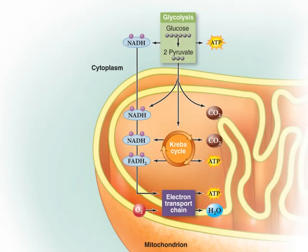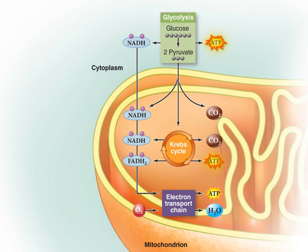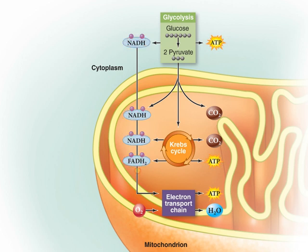Cellular respiration is a multiple step process. Glycolysis and the Krebs cycle produce a small amount of ATP and also produce electron carriers called NADH and FADH2. The electron carriers then travel to the electron transport chain, where the electrons they deposit provide the energy to produce many ATP. In fact, most of the ATP that a cell generates is the product of reactions of the electron transport chain.